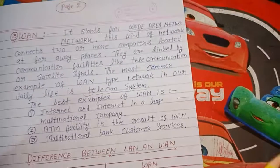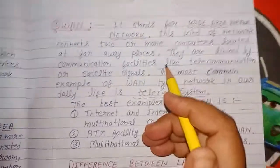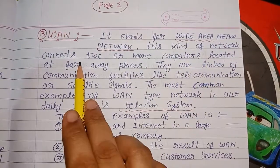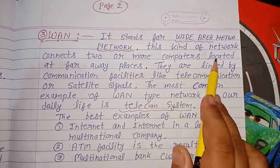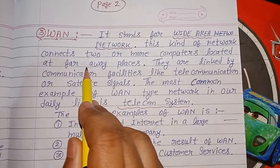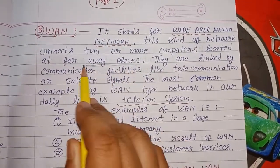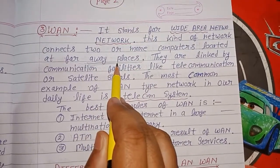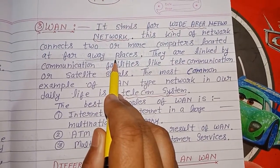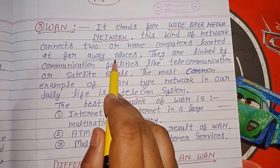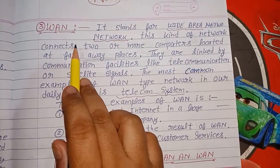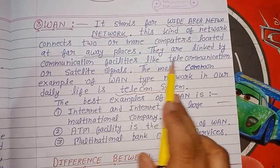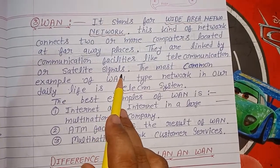Now our third network is WAN. That is, it stands for Wide Area Network. This kind of network connects two or more computers located at far away places. Means, दूर दूर तक जितनी भी दूर तक आपके systems होंगे, आप उनको एक दूसरे से connect कर सकते हैं — that network is called Wide Area Network. They are linked by communication facilities like telecommunication and satellite signals.